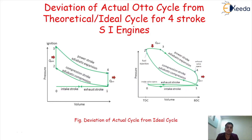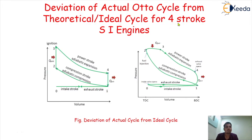When we talk about the Otto cycle, it is a theoretical cycle for all petrol engines or all SI engines. Today we are going to understand the deviation of the actual Otto cycle from the theoretical or ideal cycle for a 4-stroke SI engine.